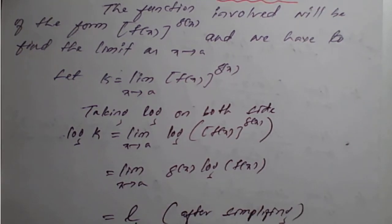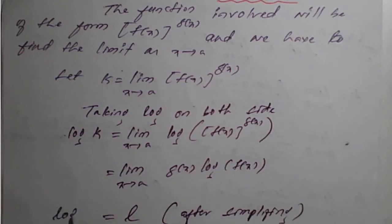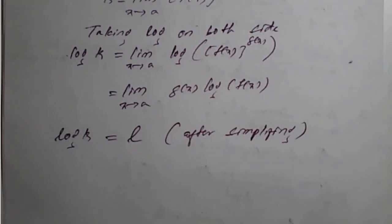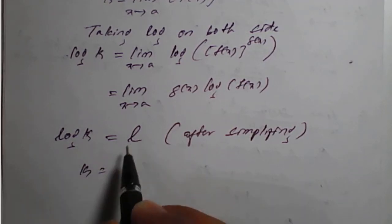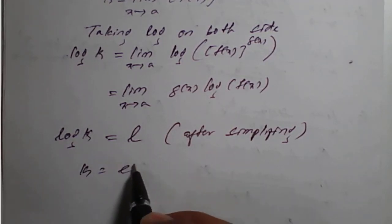After simplifying, we get log of k equals l. What is the value of k from this? So k equals - if you shift log to the right hand side, it will become e raise to l.